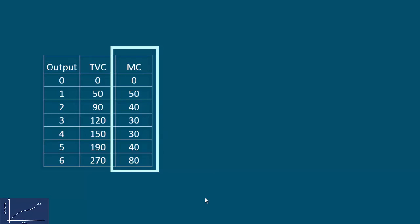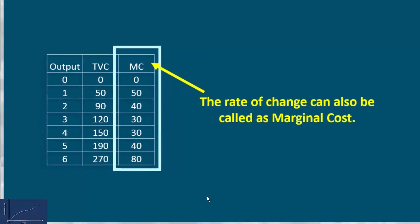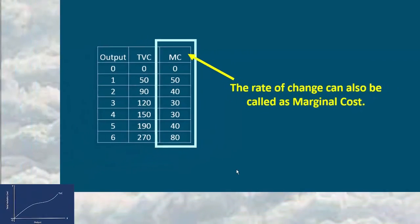In the table I have shown MC also apart from output and total variable cost. Marginal cost tells us the rate at which total variable cost changes when one more additional unit of a good is produced. From the numerical illustration, we have to learn three things.